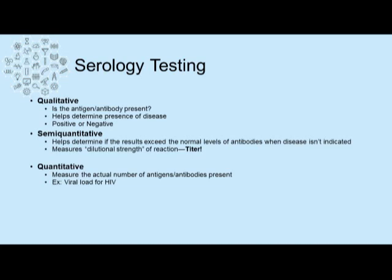If we want to know more than whether a disease is present — if we want to know how much is there — that's a quantitative test. For example, patients known to be HIV positive or hepatitis C positive don't need a qualitative test; we need a quantitative test to know how much virus is present in the patient's serum. This is known as the patient's viral load and is an example of a quantitative serology test.